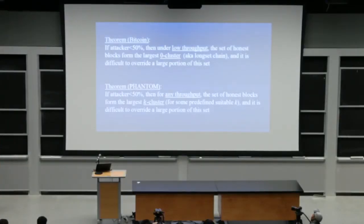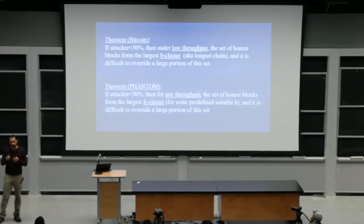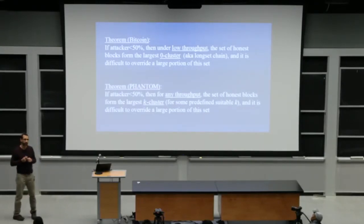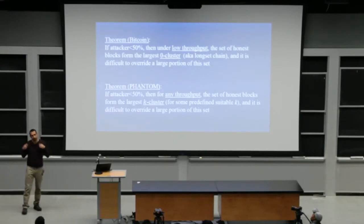Okay. And there's some theorems in the paper about how to translate Bitcoin's to compare Bitcoin security to phantom security. What you can see here is that the zero cluster rule of Satoshi is secure under low throughput. When you don't create many, when you create one block per 10 minutes, the largest zero cluster roughly corresponds to the set of honest blocks. And in phantom, you first select what throughput you want to support. This implies what your parameter K is. And then picking the largest K cluster is secure, corresponds roughly to the honest set of blocks.